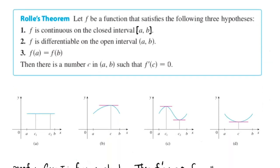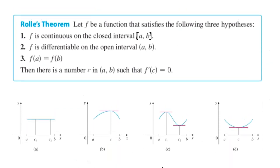Here's the statement of Rolle's Theorem, together with some pictures to help us understand it. Theorems have hypotheses and conclusions — things you're assuming and things that are guaranteed. Rolle's Theorem has three hypotheses. The first is that we have to have a continuous function on a closed interval — continuous meaning no gaps, no holes, no vertical asymptotes. The limit exists at every point, and at endpoints A and B, the right-hand and left-hand limits equal the function value.